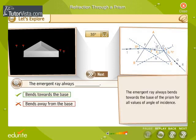The emergent ray always bends towards the base of the prism for all values of angle of incidence.